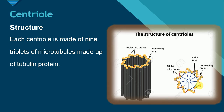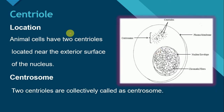...four, five, six, seven, eight, and nine. Each of these nine microtubules is itself a triplet, meaning it is made of three microtubules. Regarding location, animal cells have two centrioles located near the exterior surface of the nucleus, near the nuclear envelope. These two centrioles together are collectively called the centrosome.